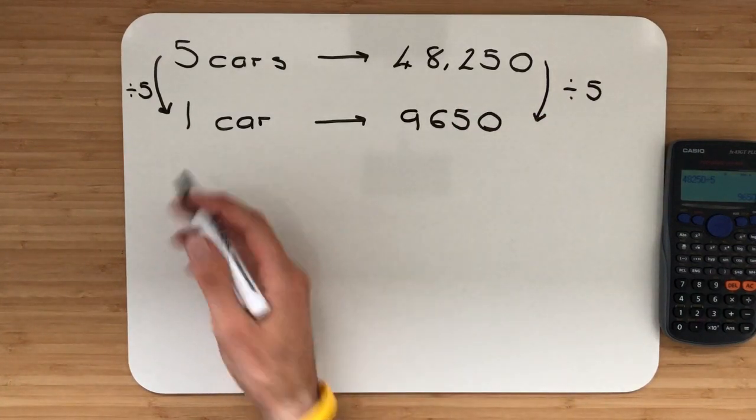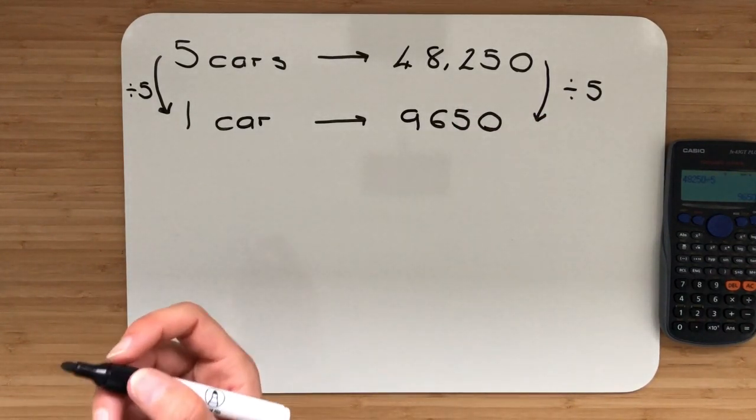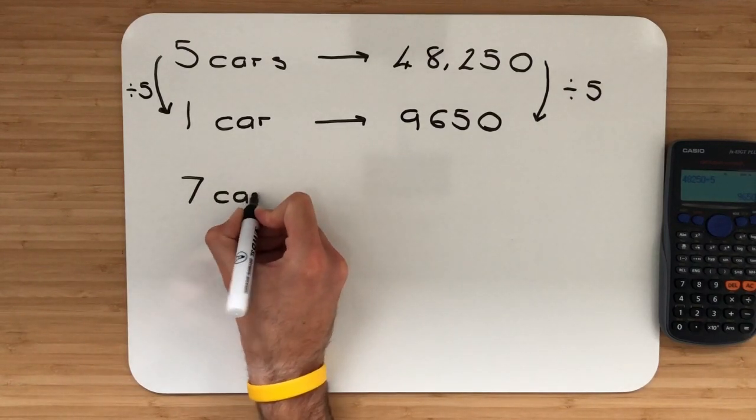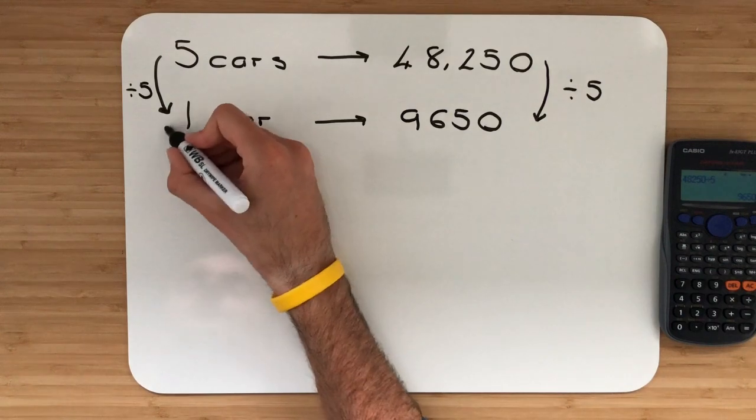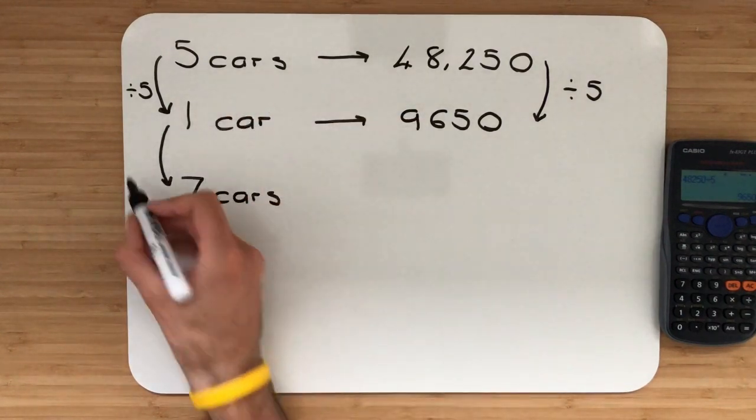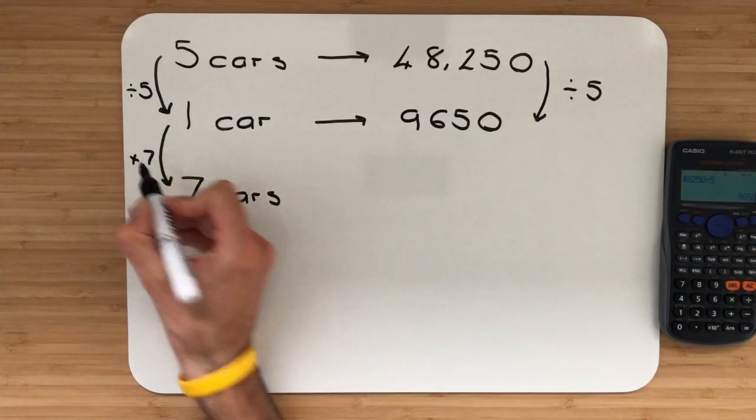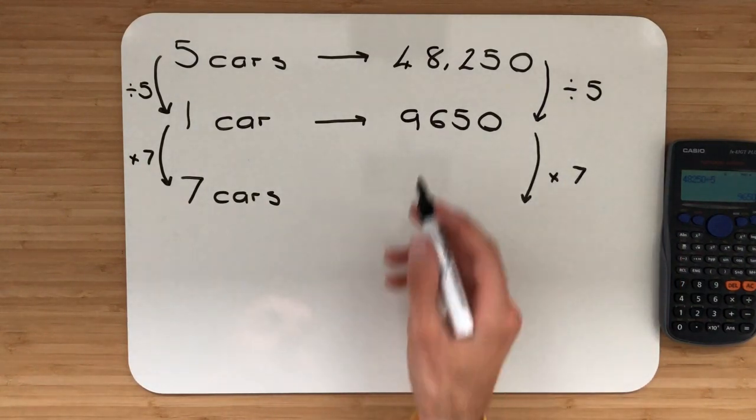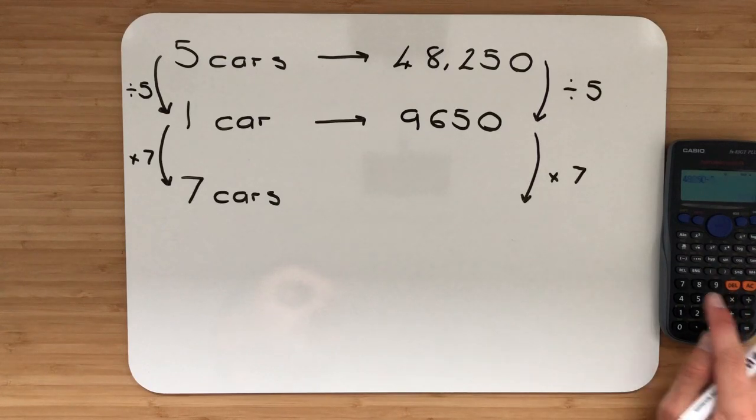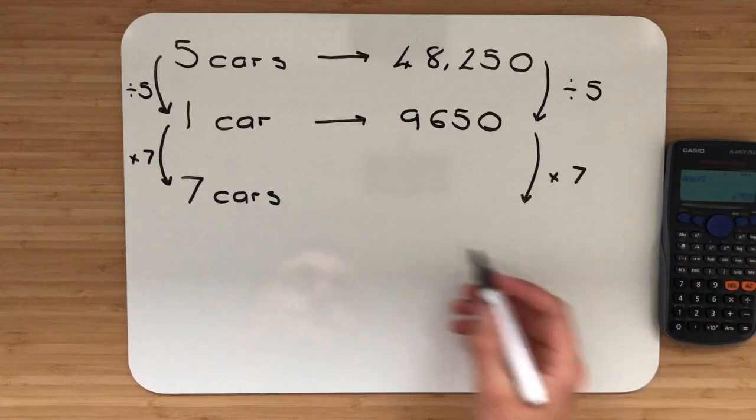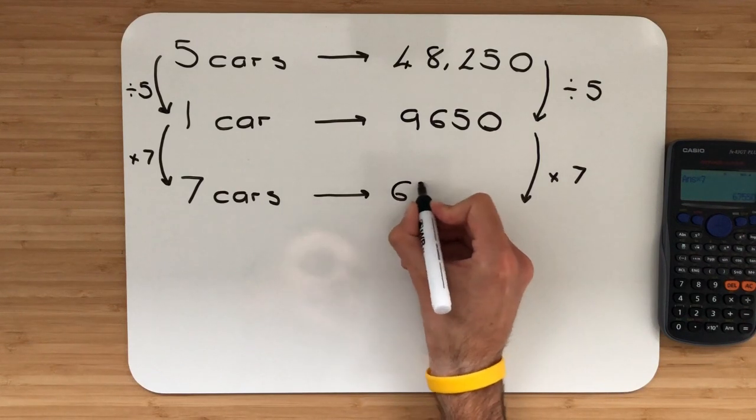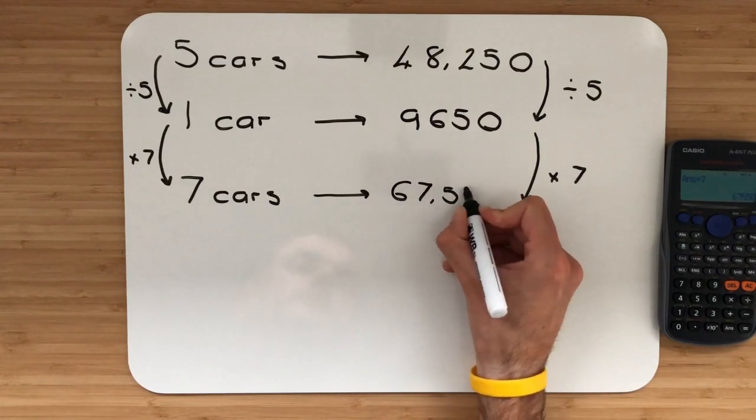Now that I've found one I can find absolutely anything. In this instance we're looking for seven cars. So to go from one to seven we simply multiply by seven. Whatever we're doing to the left we're going to do the exact same thing to the right. So let's take the 9,650 and we'll multiply that by seven. So that gives me an answer of 67,550.